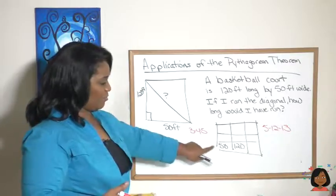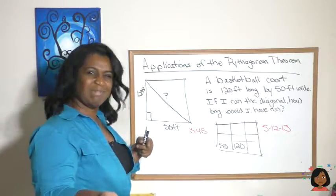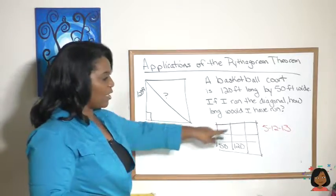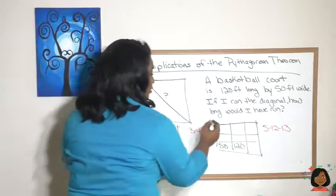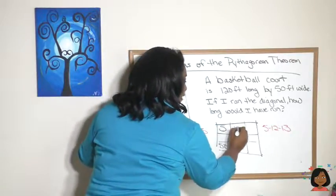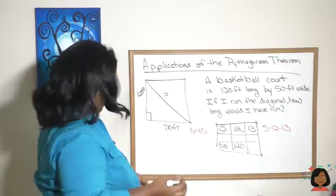All right, 3-4-5. Well, does 3 go into or 50 go into 3? Is there a multiple of 3 that's 50? Not really. So let's try the other one. 5-12-13. Ah, that one seems like that one might work. So let's write it up here. 5-12-13. And let's figure out what multiple it is.